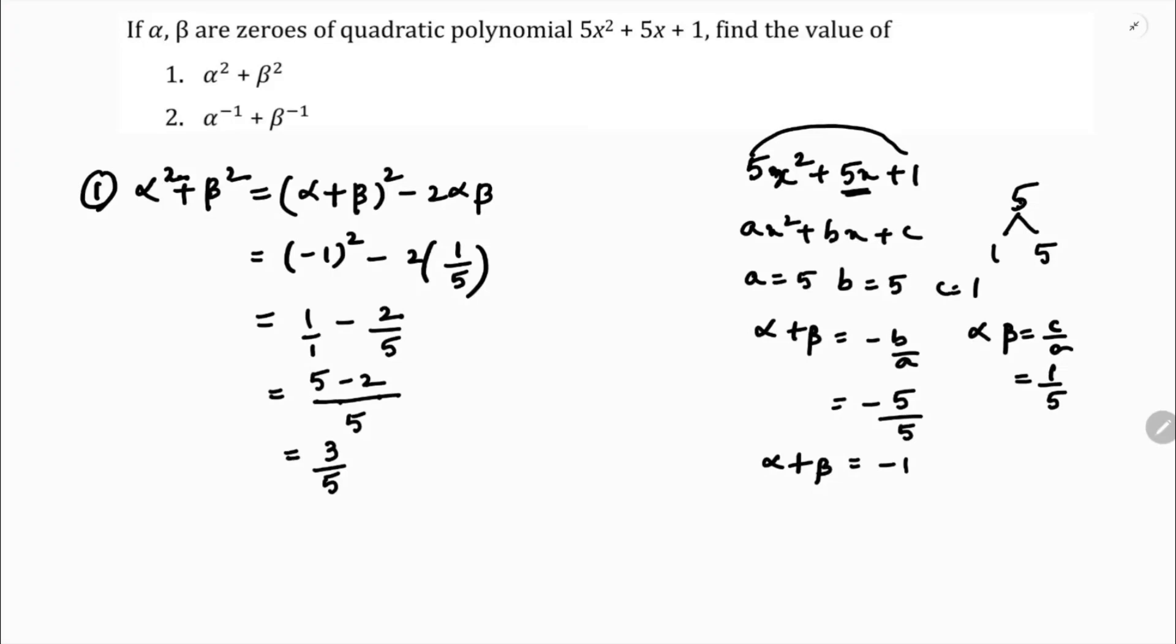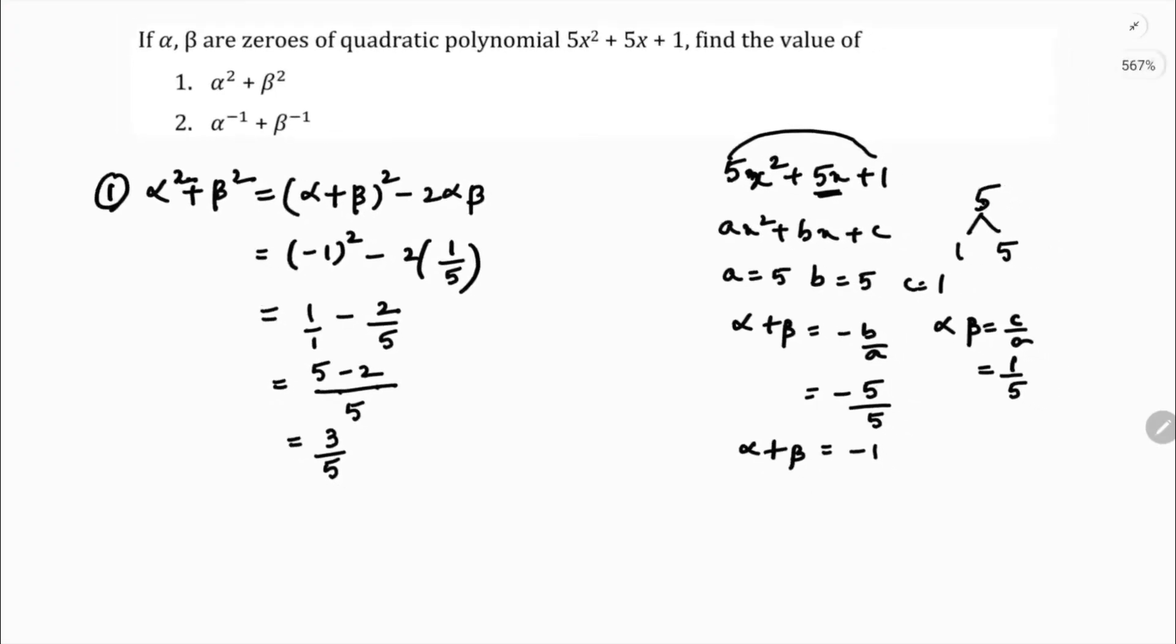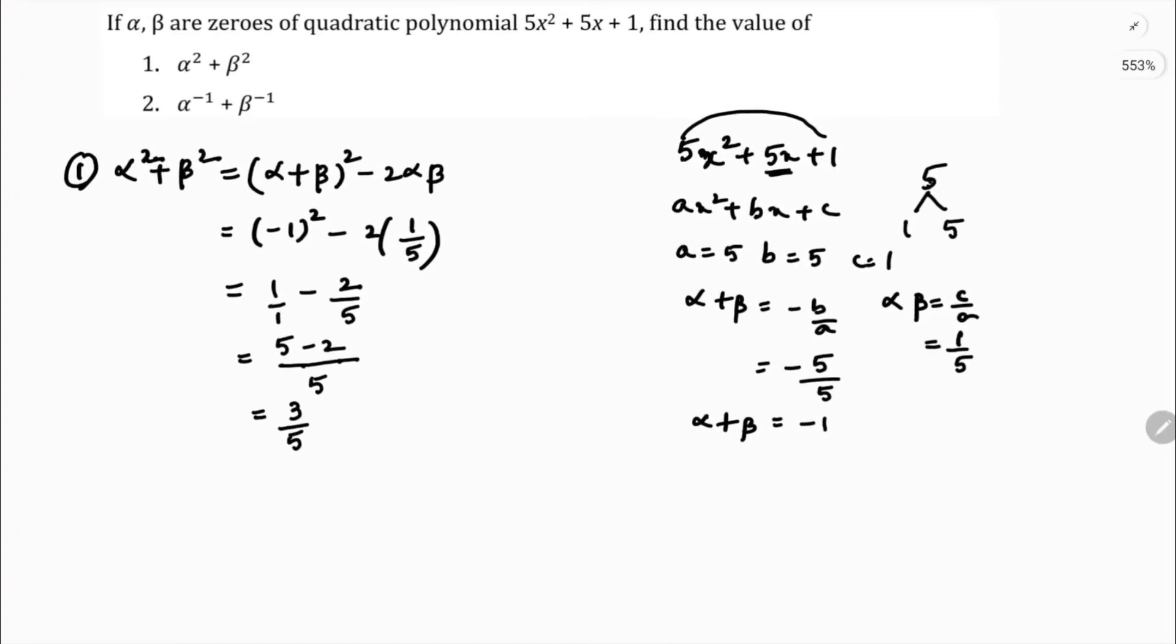Now, the second one. I will do it here. Second one is alpha power minus 1 plus beta power minus 1. You can write it as 1 by alpha plus 1 by beta.